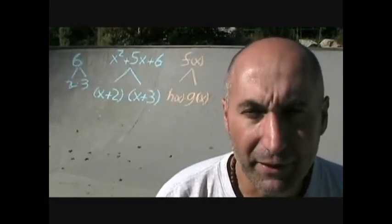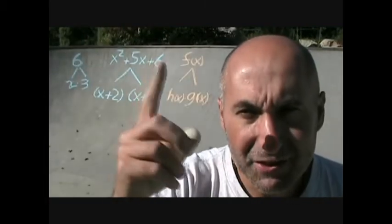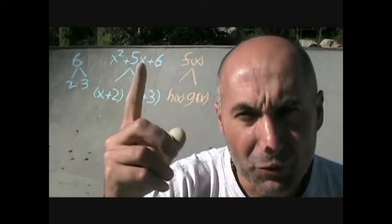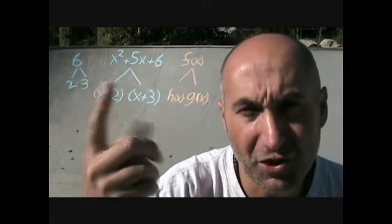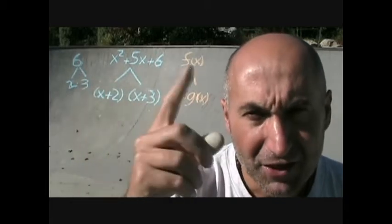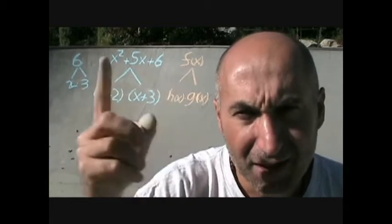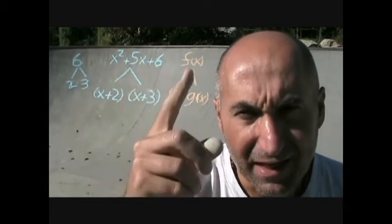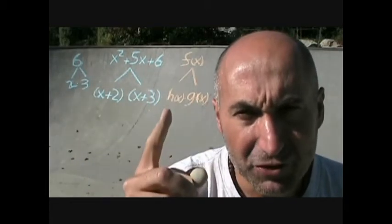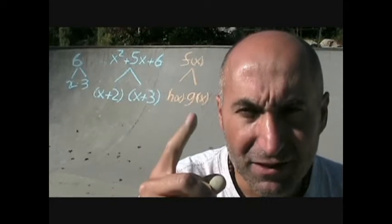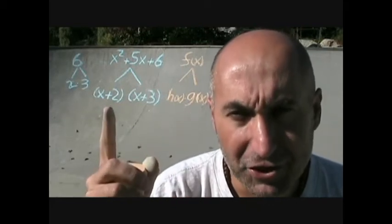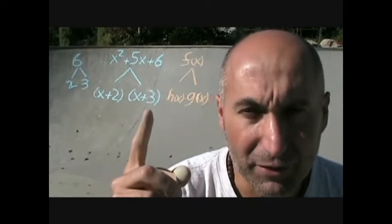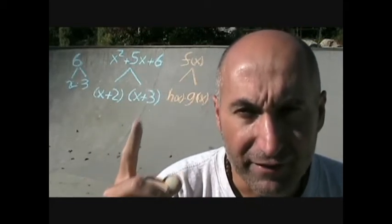The way we can think about it is this: we could call this polynomial f of x. So f of x is equal to h of x times g of x, where (x plus two) would be our h of x and (x plus three) would be our g of x.